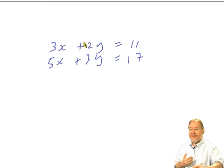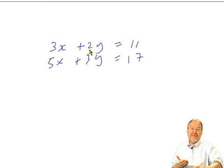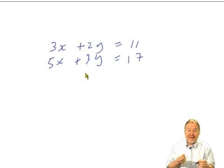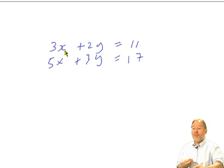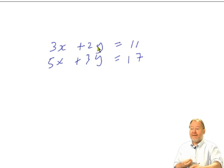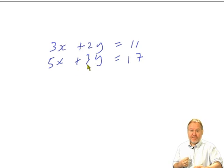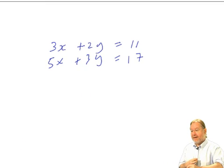Now, what we're going to try and do is make the number in front of y here and the number in front of y here the same value but of opposite signs. In other words, I'll multiply the top equation by 3 and the bottom one by minus 2 and we'll have a plus 6y and a minus 6y.